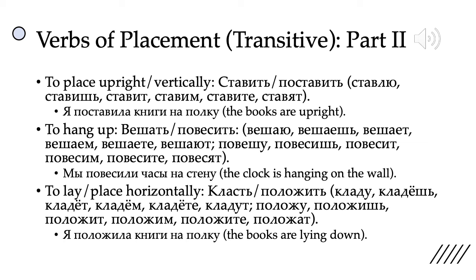Finally, we have to lay or to place horizontally: класть and положить. This is one of those verb pairs where the perfective and imperfective appear to be two different verbs. Класть is an -ст infinitive verb where an extra consonant appears — in this case д: кладу, кладёшь, кладёт, кладём, кладёте, кладут. Положить becomes положу, положишь, положит, положим, положите, положат — note the stress shift and the eight-letter spelling rule, giving у in the я form and ат in the они form. For example: я положила книги на полку — I put the books on the shelf, but in this case the books are lying down horizontally.